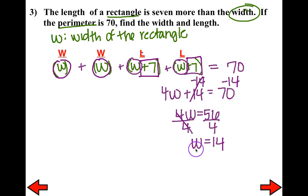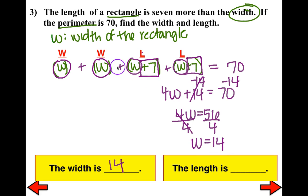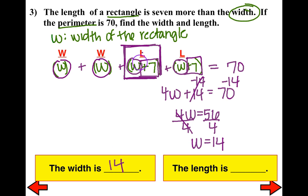W represents the width of the rectangle, so the width is 14. The length is W + 7 — replacing W with 14: 14 + 7 = 21. So the length is 21.